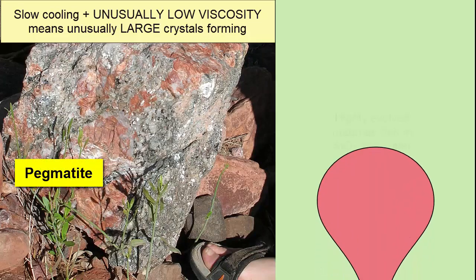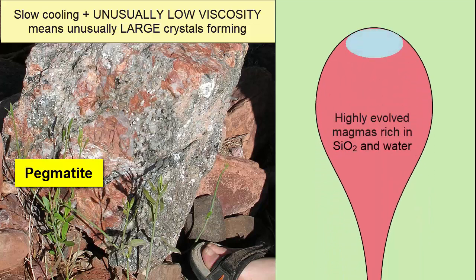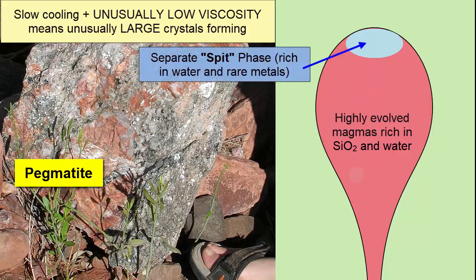The texture we get with these unusually large crystals forming in low viscosity magmas is called a pegmatite. Pegmatites form when highly evolved magmas rich in SiO2 mix with a water phase that had separated and sat at the top of the magma chamber, absorbing incompatible elements from the magma — elements that have no place in the main crystals forming from the magma. This phase is filled with all the unwanted garbage elements, such as gold, silver, and platinum.